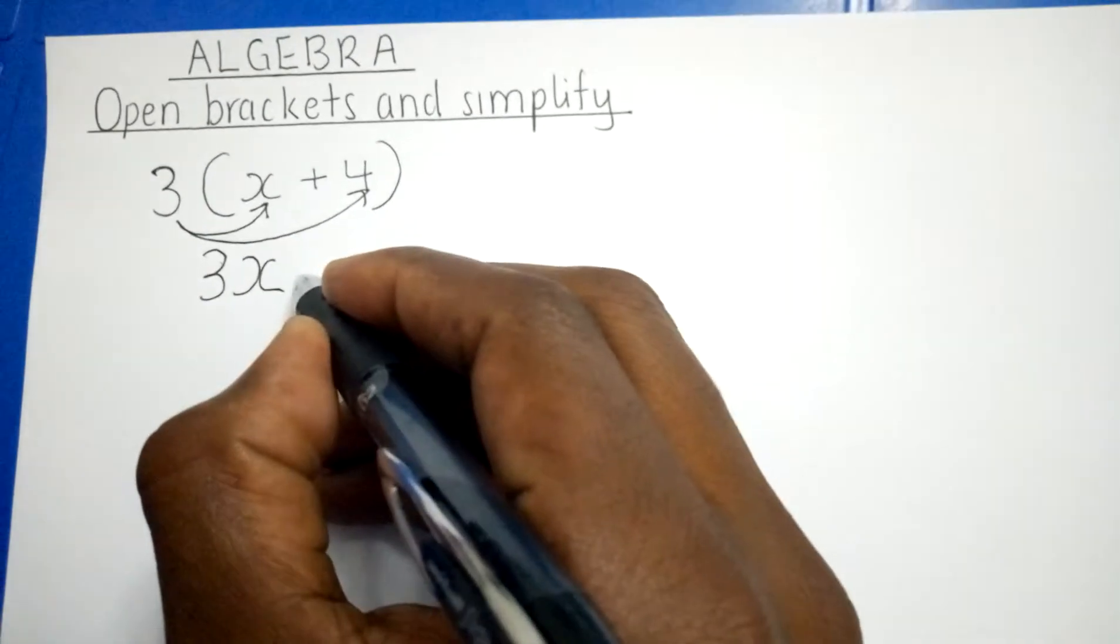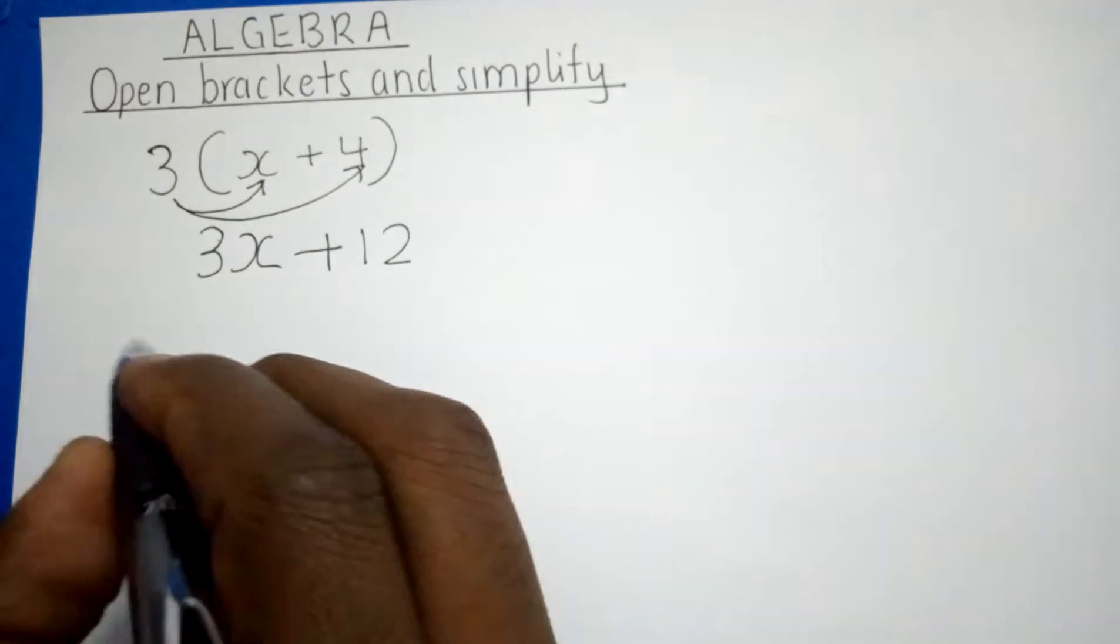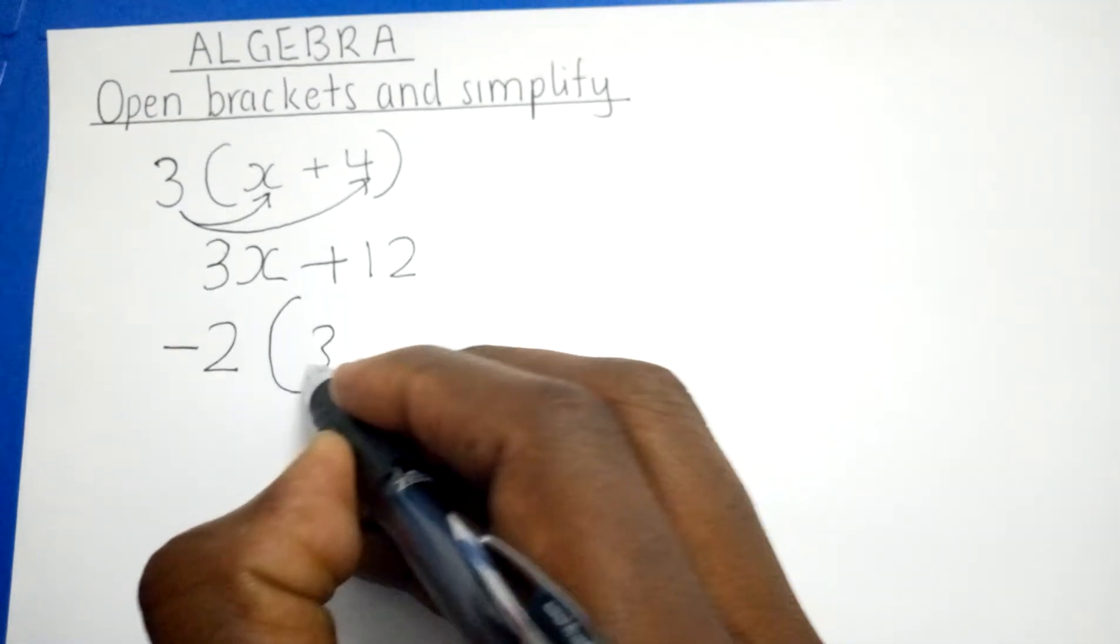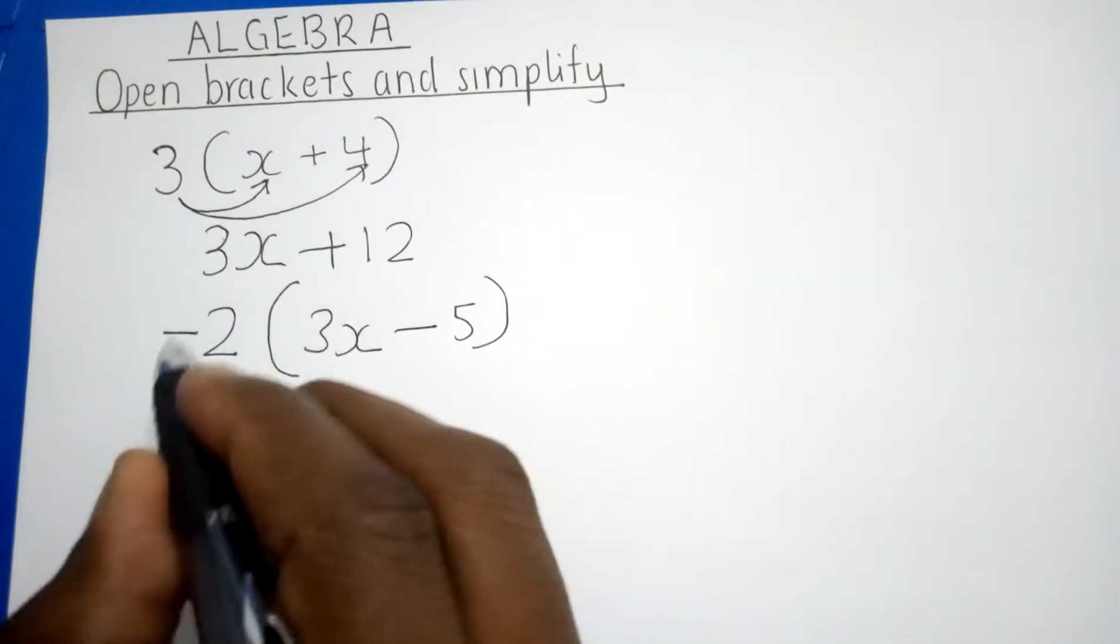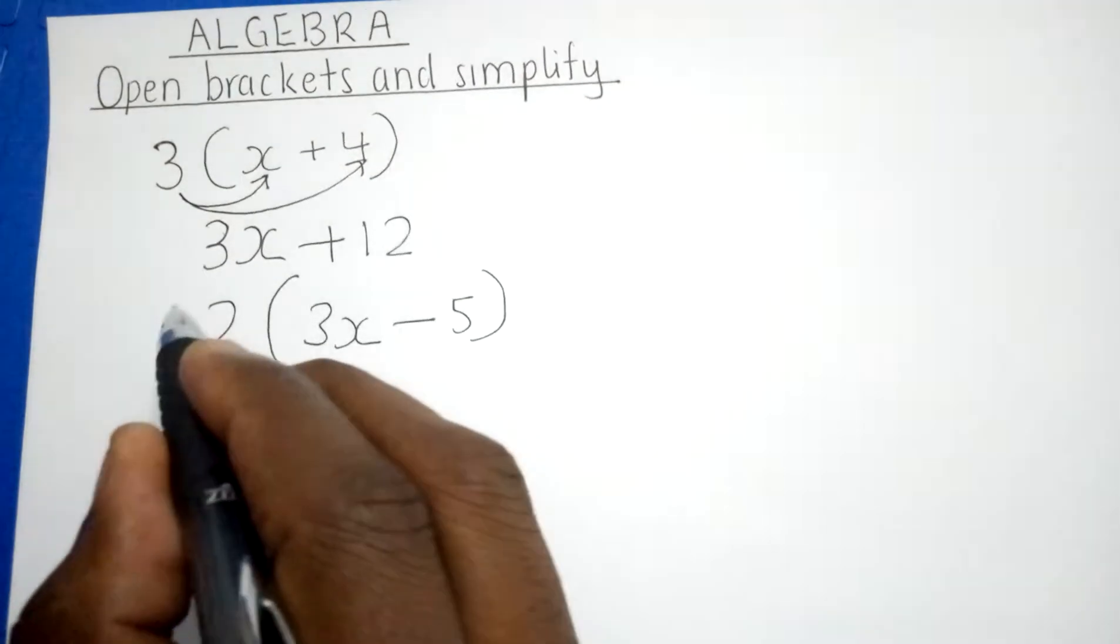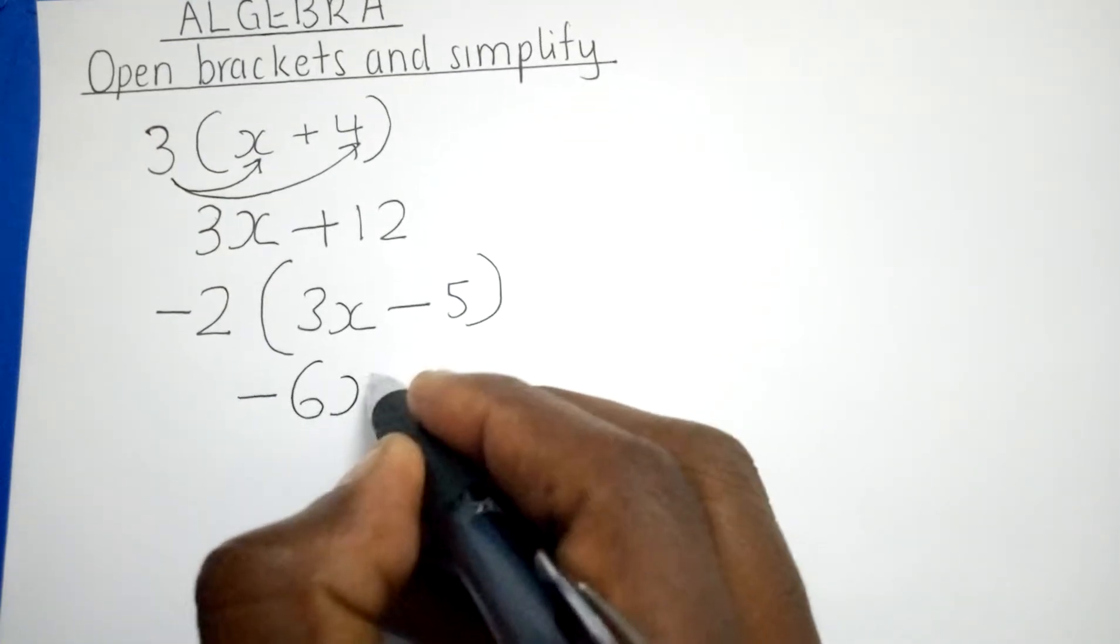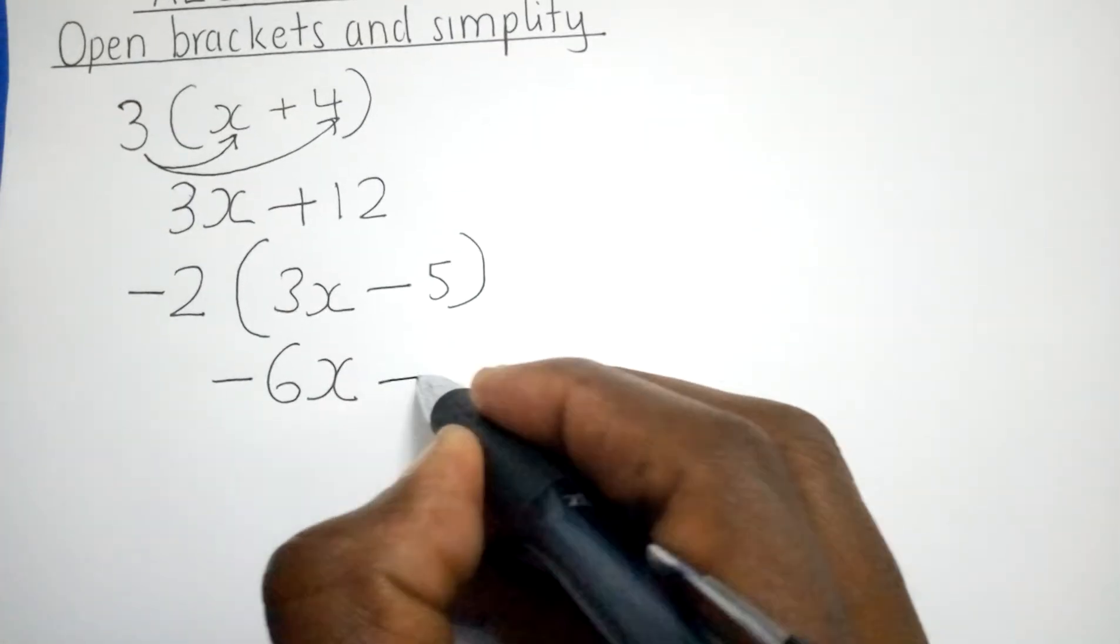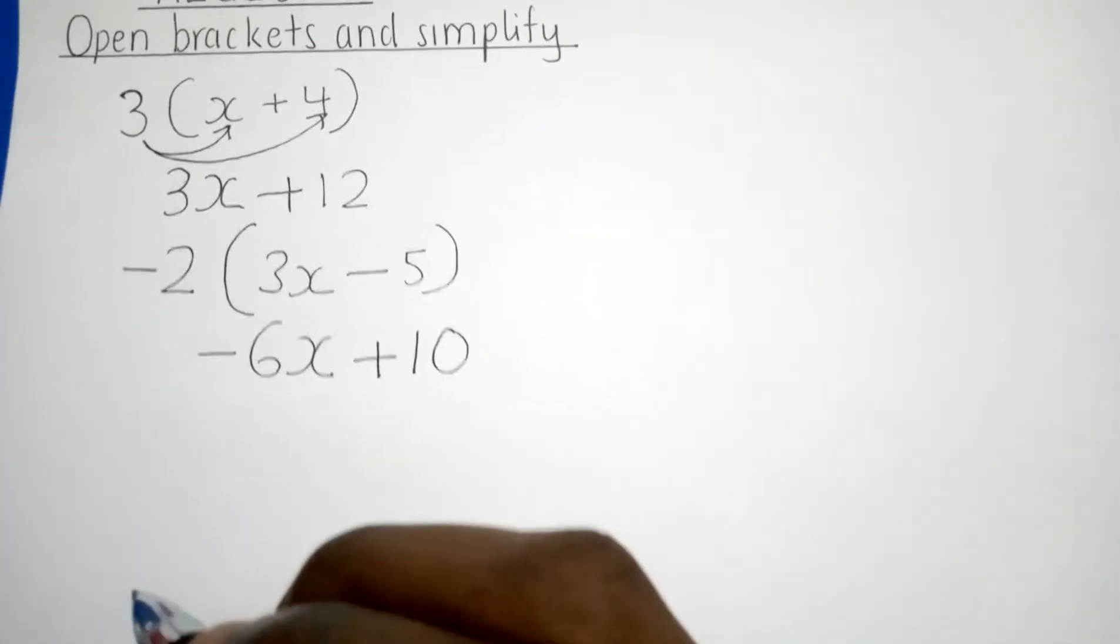Now if we have a number that is negative, and maybe inside we have a number like this one, meaning the number which is outside that has a negative, we'll have to multiply everything that is inside. So negative 2 times 3x will give us negative 6x, and negative 2 times negative 5, it will give us positive 10. This is how we open a bracket.